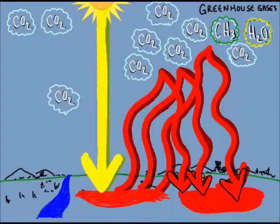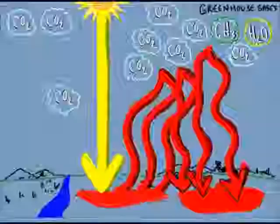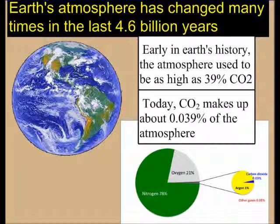We can see that when you have more carbon dioxide in the atmosphere, less heat is able to escape from the Earth. Earth's atmosphere has changed many times in the last 4.6 billion years. Early in Earth's history, the atmosphere used to be as high as 39% carbon dioxide. Today, CO2 makes up only about 0.039% of the Earth's atmosphere, but that's enough to make a really big difference in the temperature on Earth.